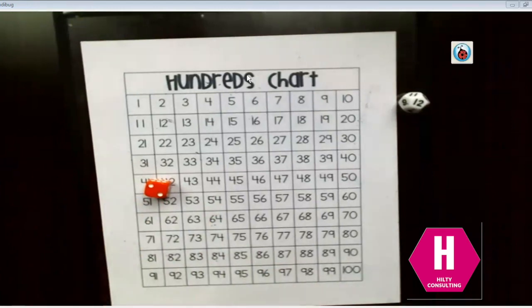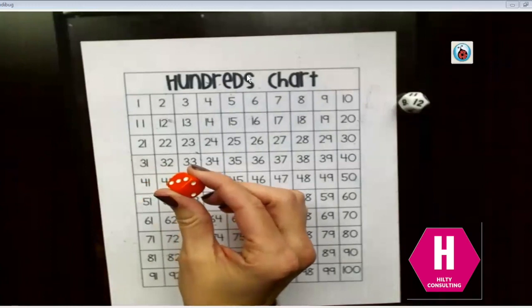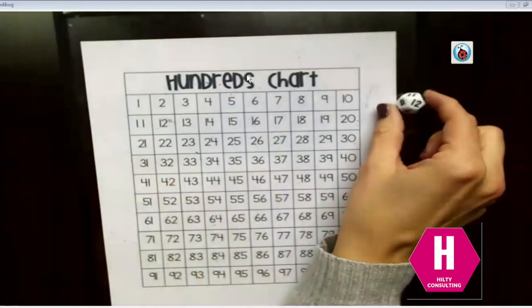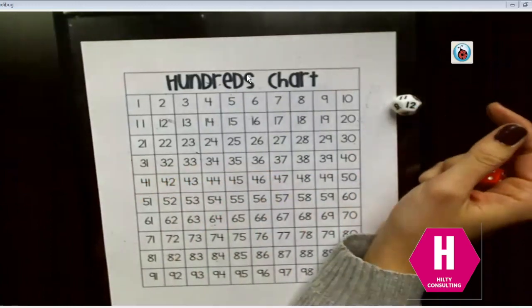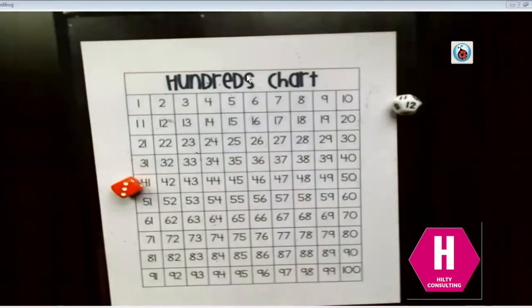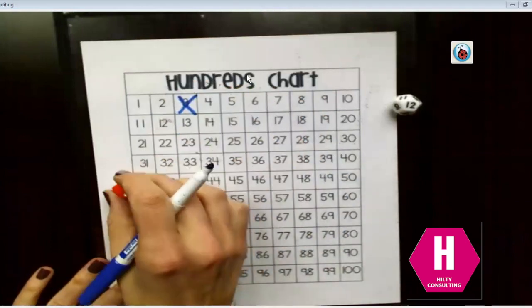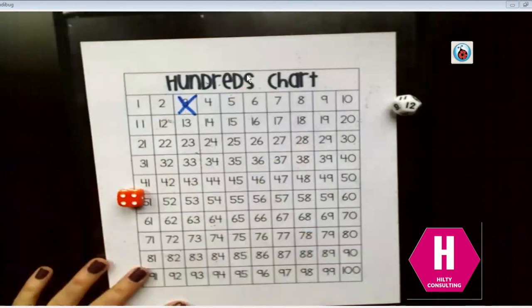You're simply going to roll your dice and continue adding on until we get to a hundred. You can use a six-sided dice, a 12-sided dice, a 10-sided dice. Let's say you don't have any dice at home. You can use playing cards. You're going to roll your dice and mark off the numbers as you go. So we are at three right now. We're going to roll again and we're going to add four more.